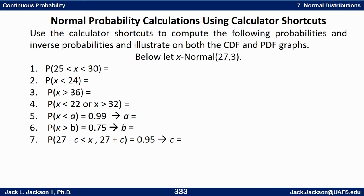We'll also do some inverse probability problems — three types. First, P(X < A) = 0.99, find A — an inverse left probability. Second, P(X > B) = 0.75, find B — an inverse right probability. Third, P(27 − C < X < 27 + C) = 0.95 — find not just the boundary values but the value of C itself.